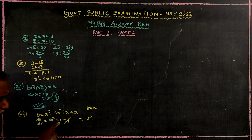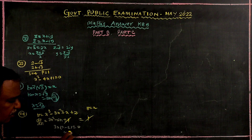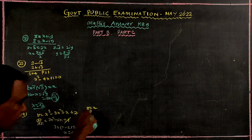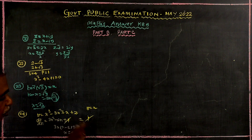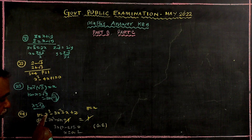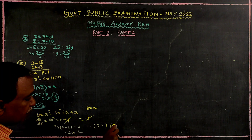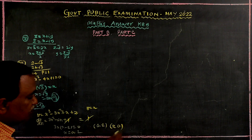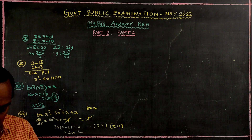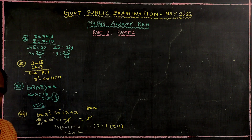Setting this equal to 0: 3x into x minus 2 equals 0, so x equals 0 or x equals 2. The points (0, 2) and (2, 0) are the solutions.